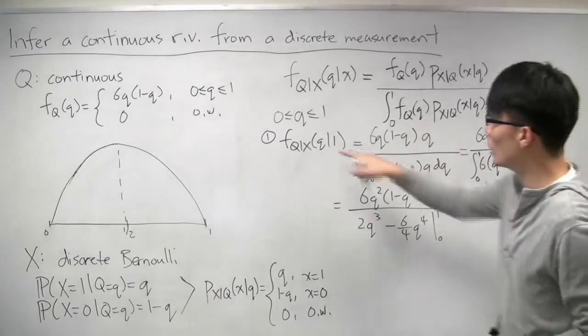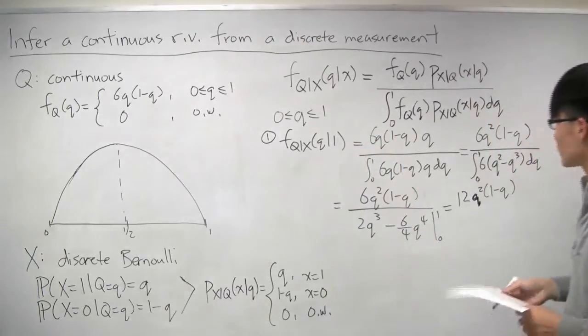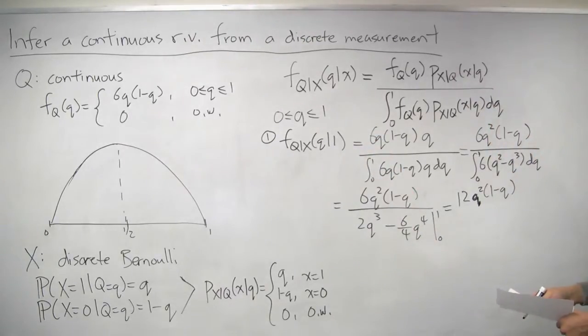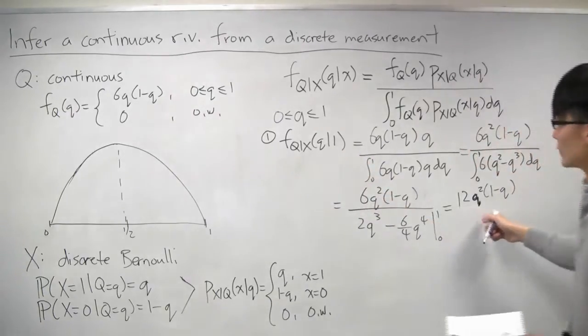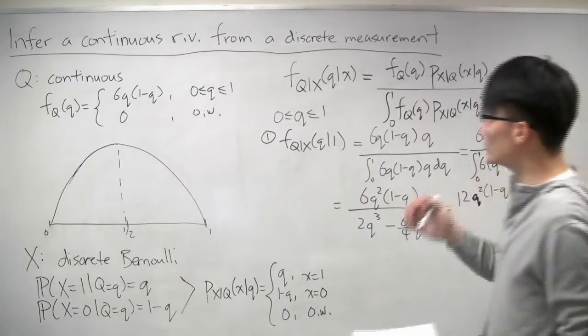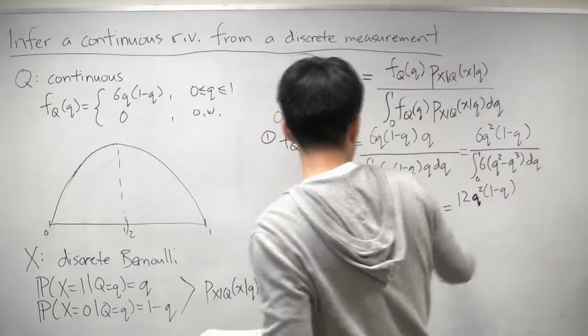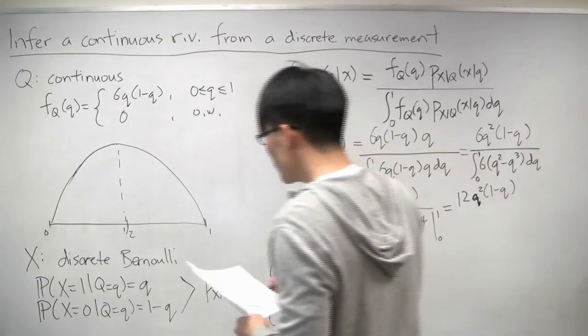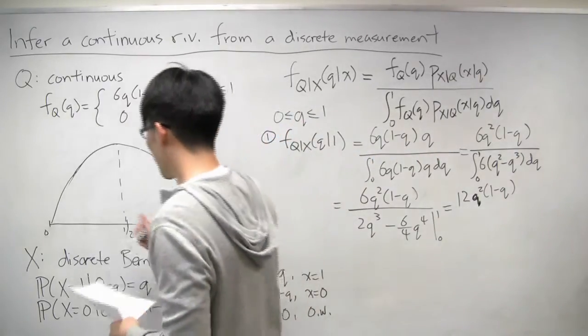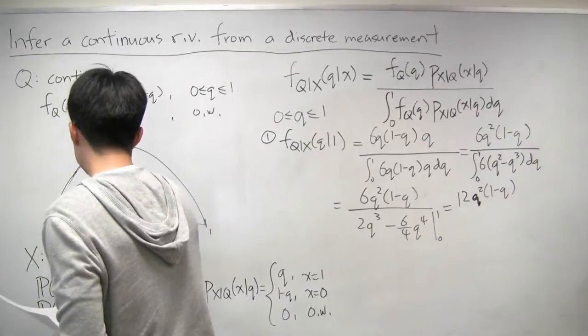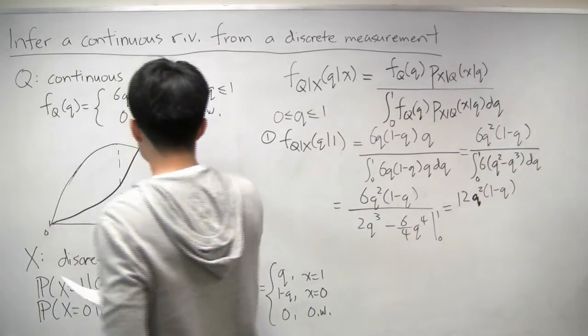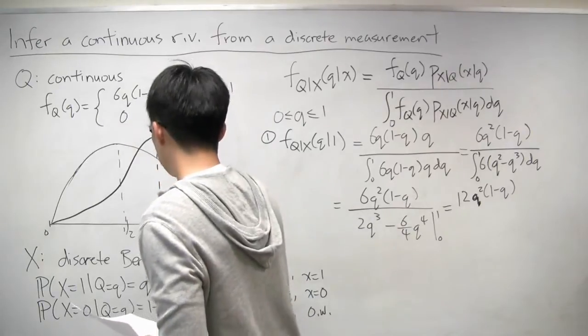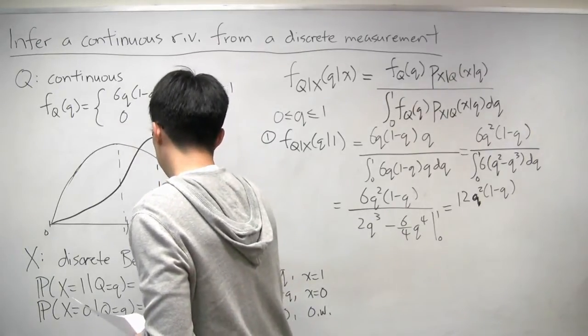And of course, this is only true when q is between 0 and 1. So the case where it's equal to 1, we have our answer. And it turns out that if you plot this, what does it look like? It looks like something like this, where the peak is now at 2 thirds.